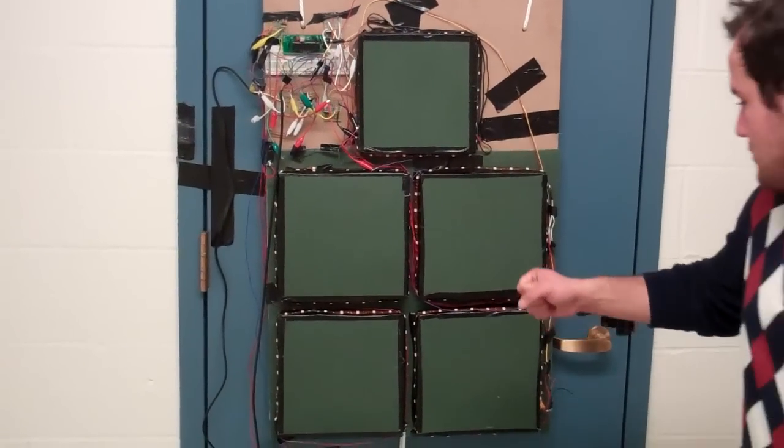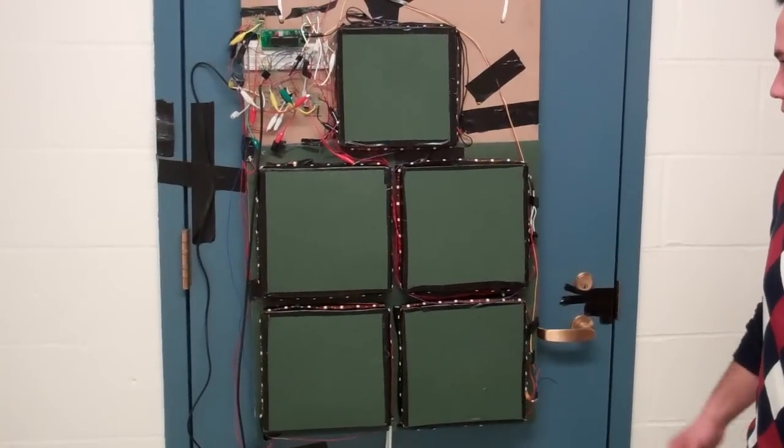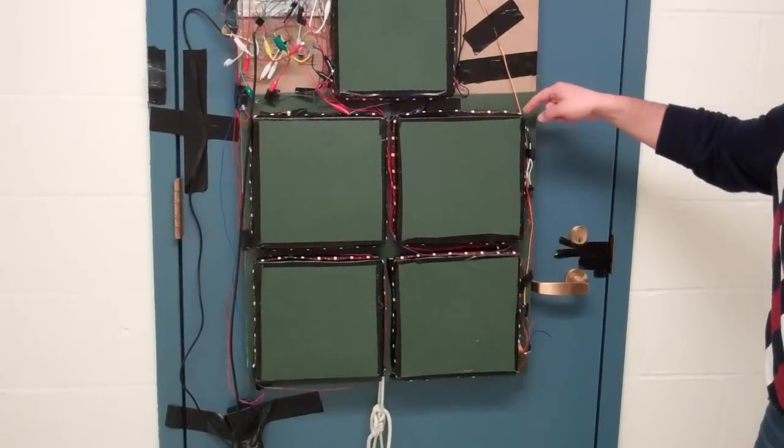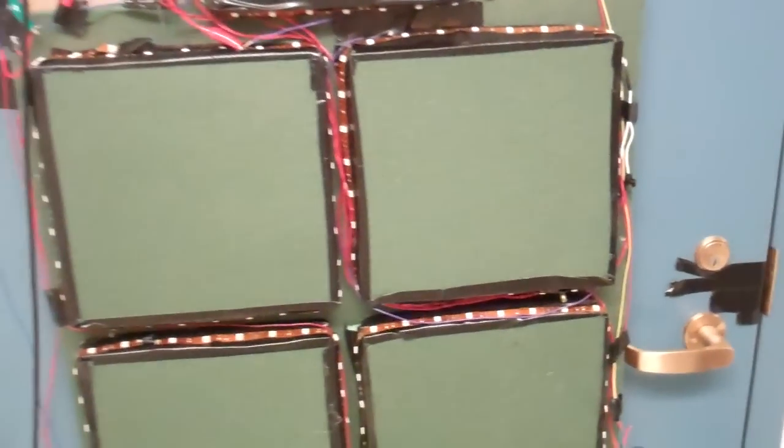So you can punch these pretty hard. I mean you're supposed to use boxing gloves but they feel like something you can really punch. So what happens is these copper looking things around the pads are actually LED ribbons. The LEDs light up to tell you where to hit.